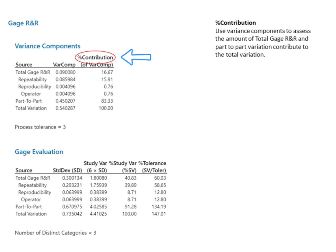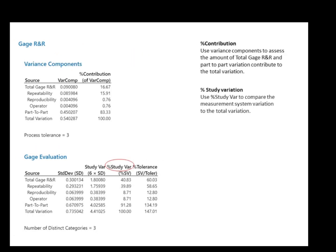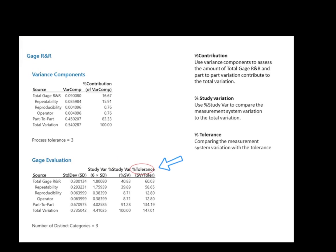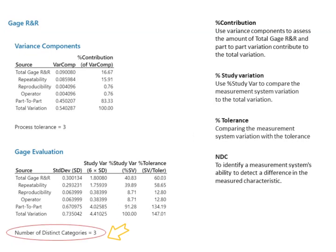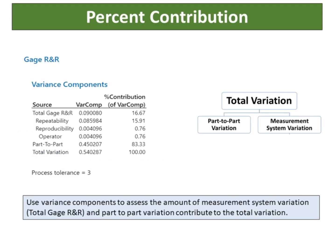Percent Contribution: Use variance components to assess the amount that total gauge R and R and part-to-part variation contribute to the total variation. Percent Study Variation: Use percent study variation to compare the measurement system variation to the total variation. Percent Tolerance: Compare the measurement system variation with the tolerance. NDC: Identify a measurement system's ability to detect a difference in the measured characteristic.